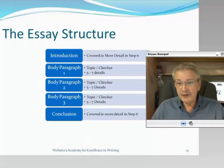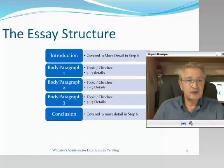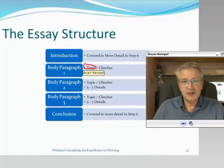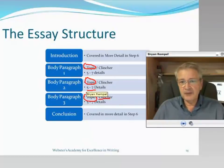In between the introduction and conclusion, you'll have body paragraphs, each one related to an individual topic. If you had three topics, you'd have three paragraphs in the middle. We follow the topic-clincher rule, include five to seven details, and this is the building block of a basic essay.